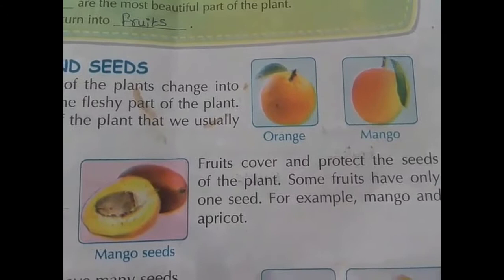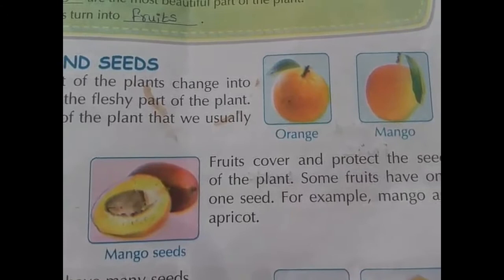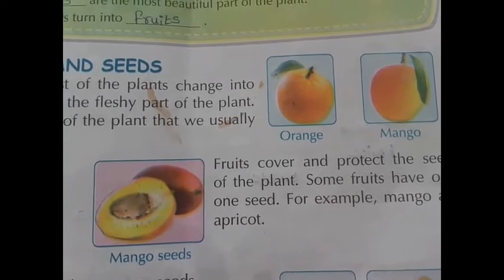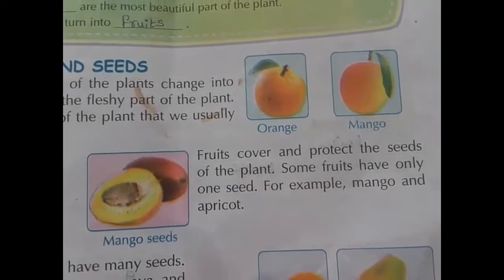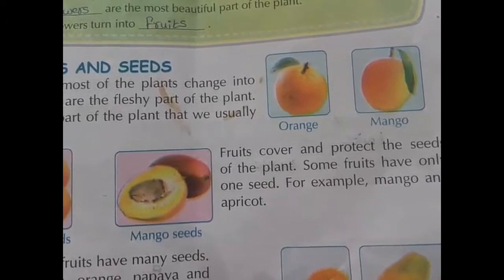Do you like orange, mango, apple, and other fruits? How do fruits come out from the plants? Actually, they come out from the flowers. Flowers of most plants turn into fruits. Fruits are the fleshy part of the plant — this part we eat very happily.